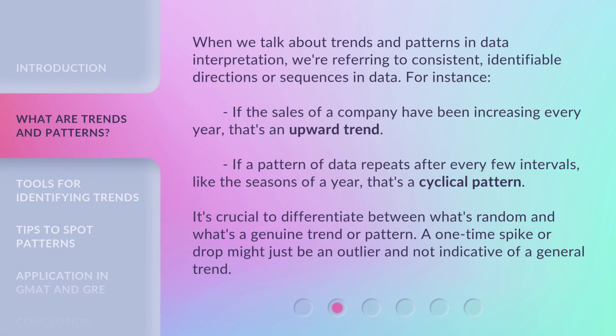When we talk about trends and patterns in data interpretation, we're referring to consistent, identifiable directions or sequences in data. For instance, if the sales of a company have been increasing every year, that's an upward trend. If a pattern of data repeats after every few intervals, like the seasons of a year, that's a cyclical pattern. It's crucial to differentiate between what's random and what's a genuine trend or pattern. A one-time spike or drop might just be an outlier and not indicative of a general trend.